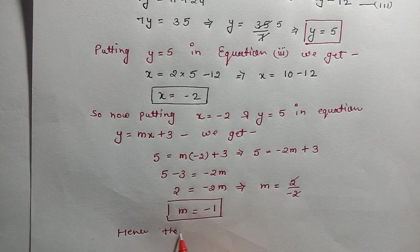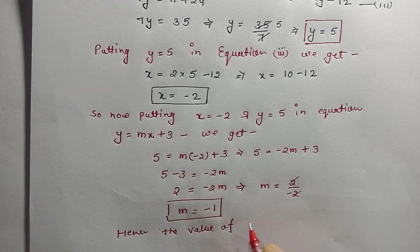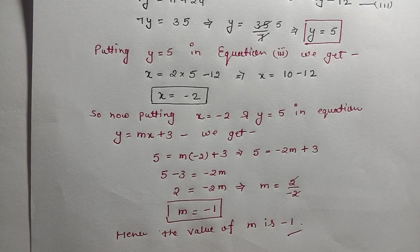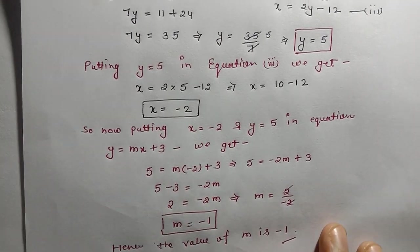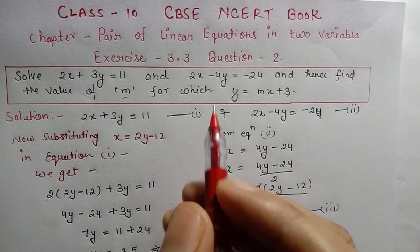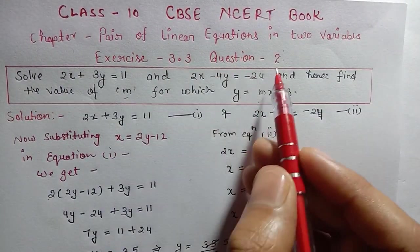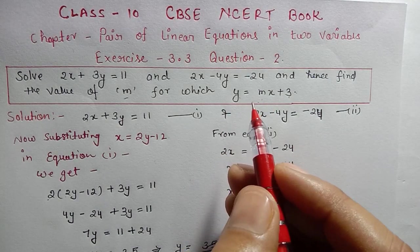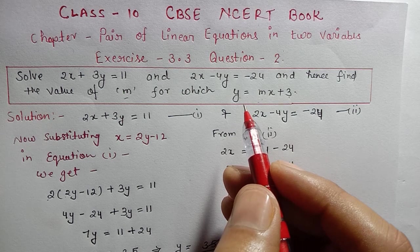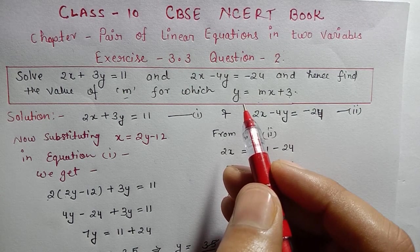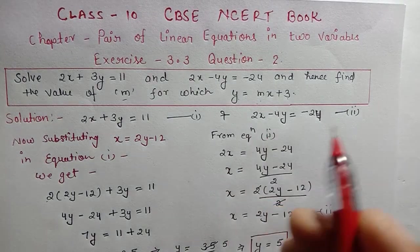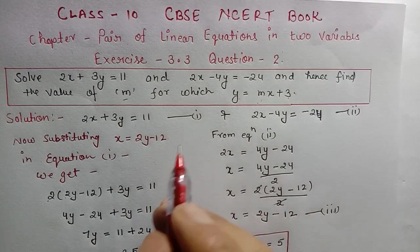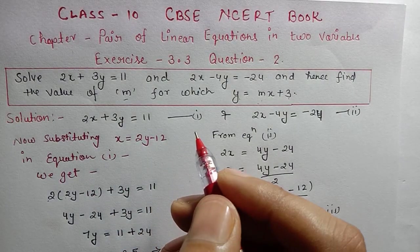Hence the value of m is -1. You should write it this way in your exam. I hope Exercise 3.3 Question 2 was clearly understood. If you have any doubt, comment in the comment box. If you liked the video, please like, subscribe to the channel, and don't forget to press the bell icon for daily updates. Thank you.